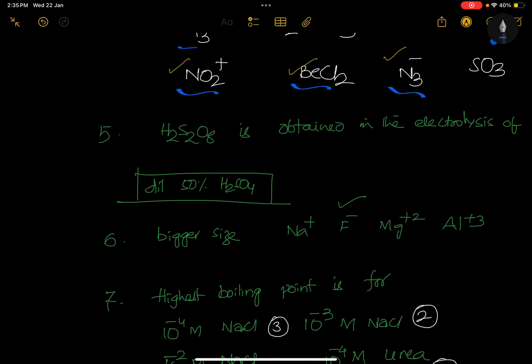H2S2O8 is obtained in electrolysis of - okay, at this point we discussed general in electrochemistry or in hydrogen lesson, where dilute 50% H2SO4 on electrolysis produces H+ and HSO4-. HSO4- will give you H2S2O8 at anode.